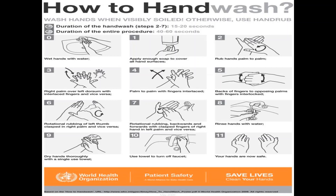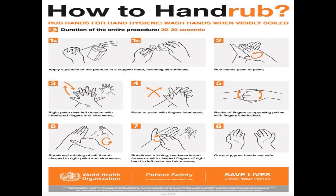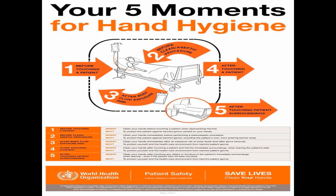For hand rub, the same steps apply: rub hands palm to palm, rotational rubbing backwards and forwards with clasped fingers. Hand rub takes 20 to 30 seconds. Hand hygiene (hand washing) takes 40 to 60 seconds. The 5 moments of hand hygiene per WHO are: 1. Before touching the patient. 2. Before a clean or aseptic procedure.